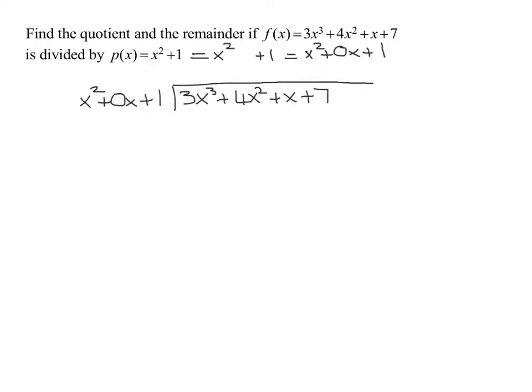Now the process for long division is you take the leading term in the dividend and divide it by the leading term in the divisor. So I'm going to take 3x cubed and divide it by x squared. And that gives me 3x. That's part of my quotient. My quotient I write up here. And I'm going to write the 3x above the x in the dividend.